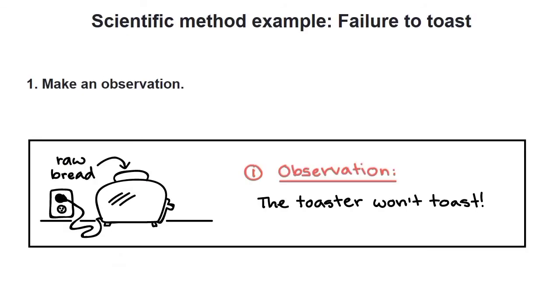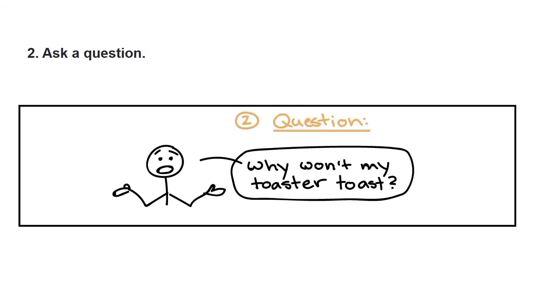Let's take an example for scientific method: failure to toast. First, we make an observation. Our observation is here we have a raw bread. The toaster won't toast. Let's ask a question. My question would be: why won't my toaster toast? What could be the reason for the toaster not to work?